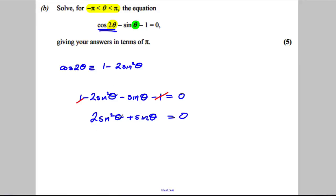Okay, now it was both negative but I've just multiplied it by negative 1. Factorize sine theta out. So sine theta, you'd have 2 sine theta add 1 is 0. So 2 sets of answers, namely where sine theta is 0 or sine theta is negative 1.5.